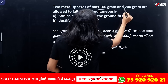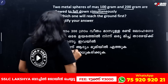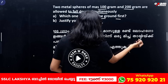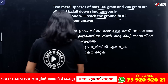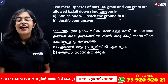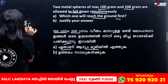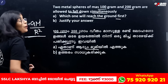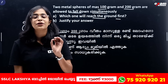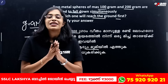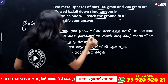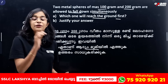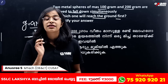Two metal spheres of mass 100 g and 200 g are allowed to fall down simultaneously. Which one will reach the ground first? Acceleration due to gravity g = GM/R², which does not depend on the mass of the object. So both spheres experience the same acceleration and will reach the ground at the same time.